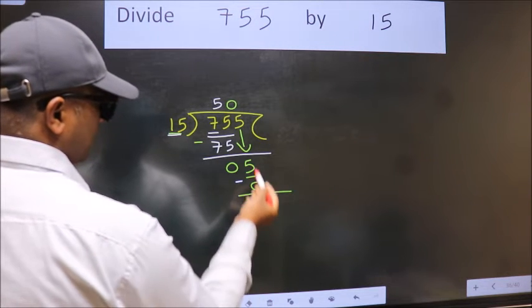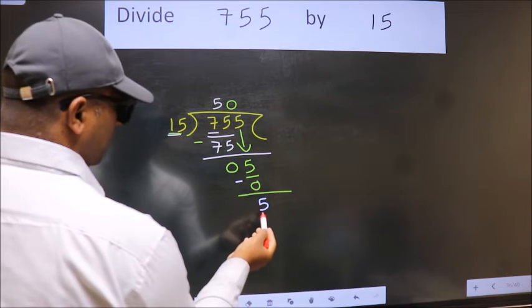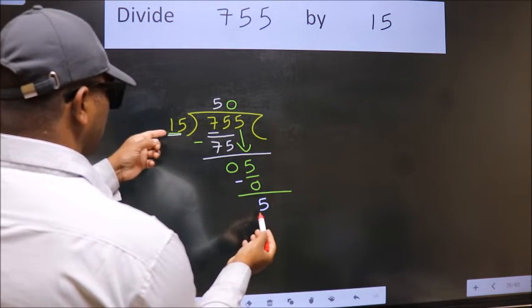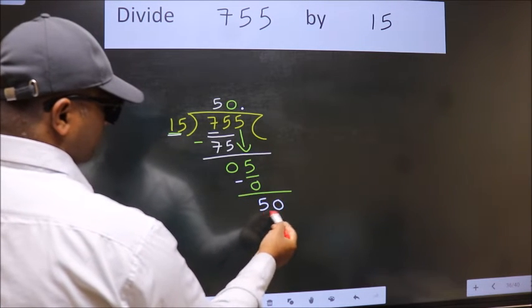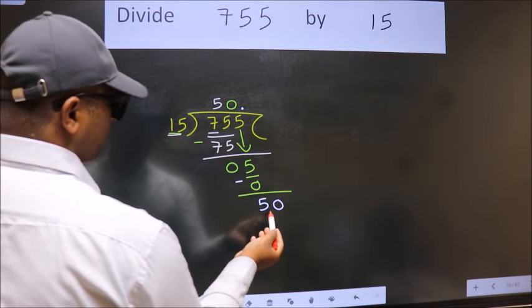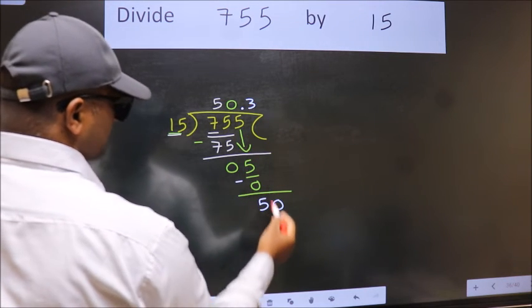Over here, we did not bring any number down, and 5 is smaller than 15. So now we can put dot and take 0. So 50. A number close to 50 in the 15 table is 15 threes, 45.